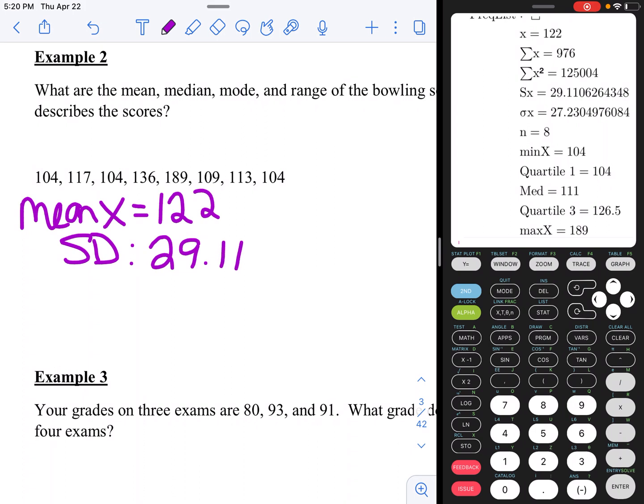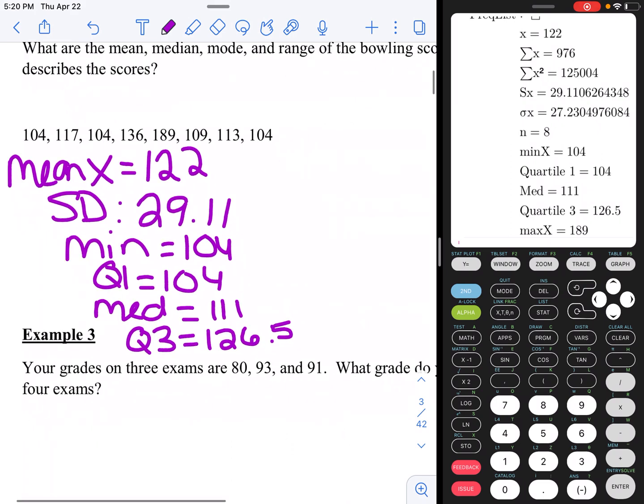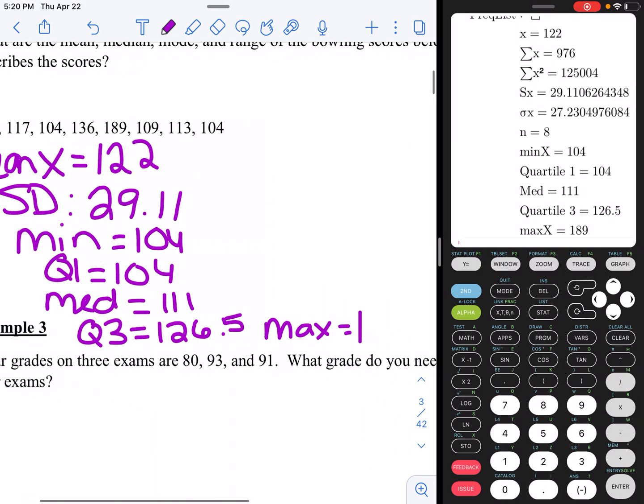You can see the minimum, you can see quartile 1. I'll write all of it down. So the minimum is 104. Q1 is also 104. Then we have median, M-E-D, 111. Quartile 3, 126.5. And the maximum is 189.